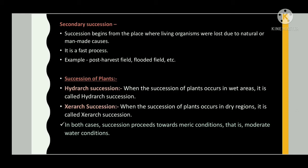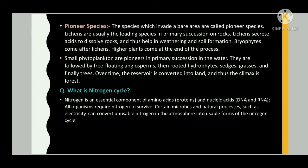When the succession of plants occurs in wet areas, it is called hydrosere succession. When the succession of plants occurs in dry regions, it is called xerosere succession. In both cases, succession proceeds towards mesic conditions, that is, moderate water conditions. The species which invade a bare area are called pioneer species.